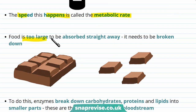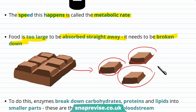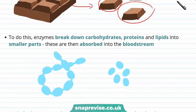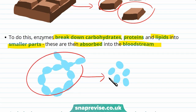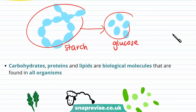Food is too large to be absorbed straight away and it needs to be broken down. You can think of this like a chocolate bar — it's quite hard to fit an entire chocolate bar in your mouth. However, if you break it into lots of little small pieces, it's much easier. This breaking down process is done by enzymes. Enzymes break down carbohydrates, proteins and lipids into smaller parts, and these are then absorbed into the bloodstream where you can use them. For instance, starch is broken down into glucose, and glucose is a much smaller molecule than starch.